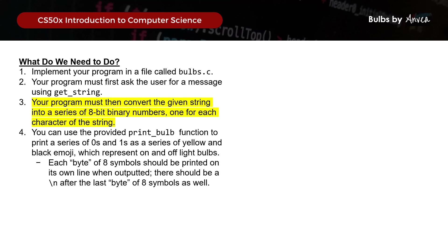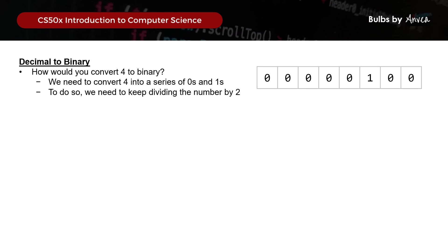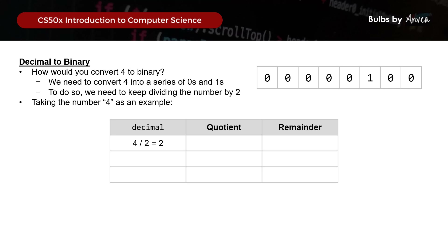Let's focus on how to convert the string into a series of 8-bit binary numbers. Starting with the example of how to convert the number 4 into binary - the brief tells us we need to keep dividing the number by 2. Taking 4 divided by 2, the quotient is 2 and the remainder is 0. This 0 gets parked in the last value of the binary array.